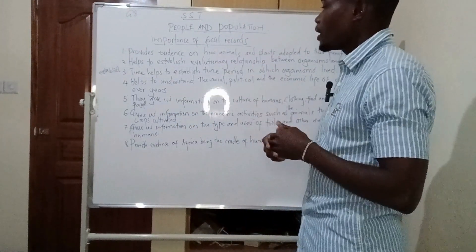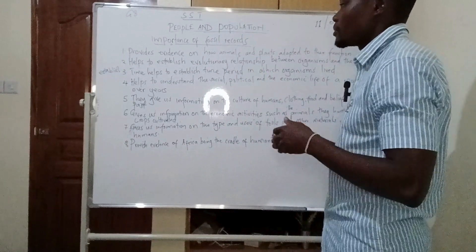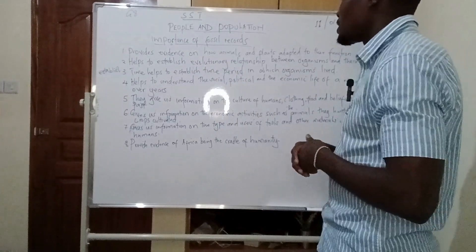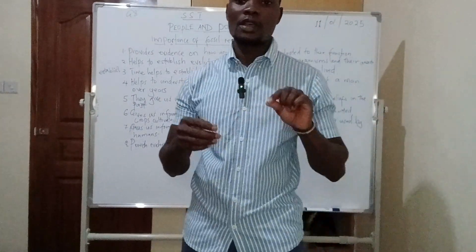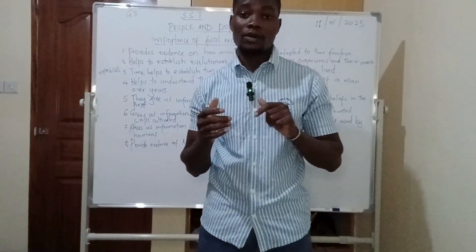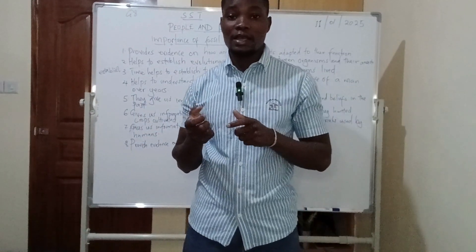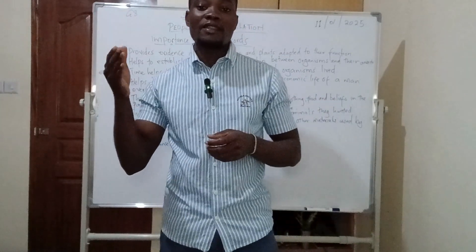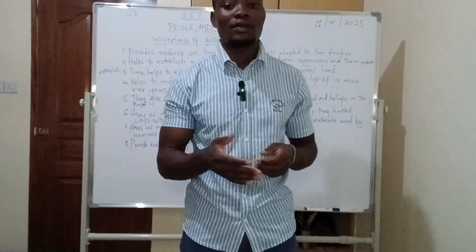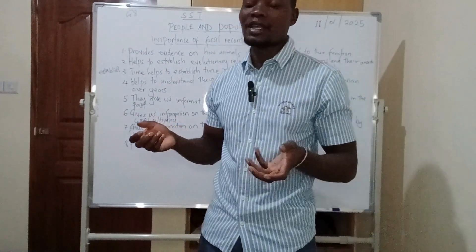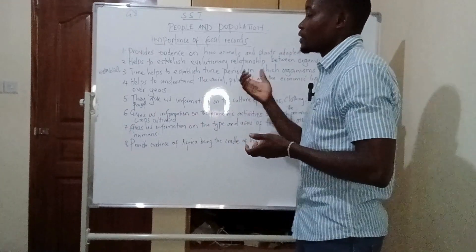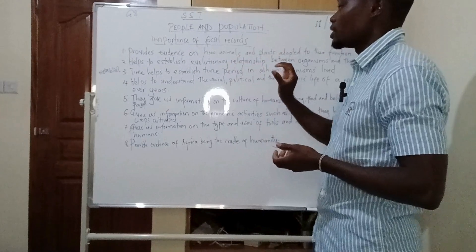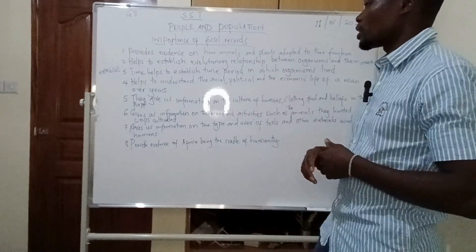Fossil records also establish the time period in which organisms lived. For example, when looking at organisms and their evolution, scientists use terms like 'this organism lived 30 million years ago' or 'even 150,000 years ago.' They reached those conclusions because they studied the fossil records, which helped establish the time period in which particular organisms existed.